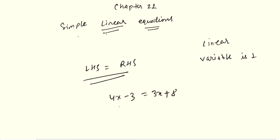This is an equation — this is the left hand side and this is the right hand side. As you can see, 4x minus 3 and 3x plus 8. The only variable is x, which we want to calculate. The power of x is 1 here, as you can see.